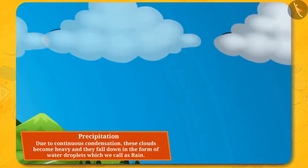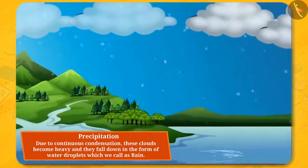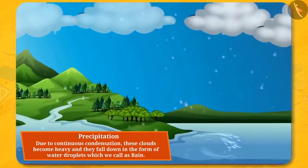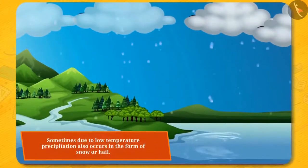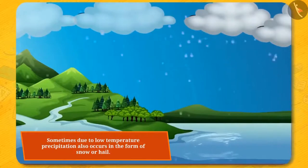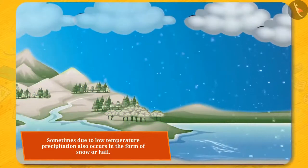Due to continuous condensation, these clouds become heavy and they fall down in the form of water droplets, which we call rain. This process is called precipitation. Sometimes, due to low temperature, precipitation also occurs in the form of snow or hail.